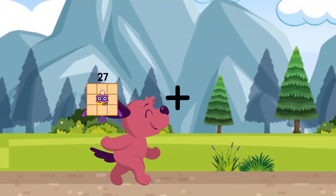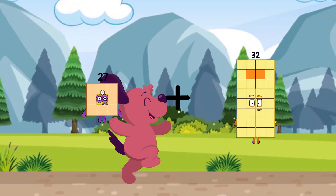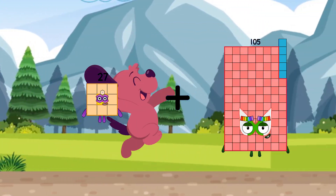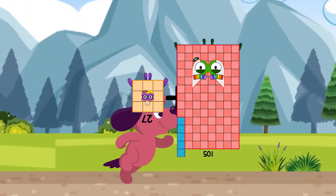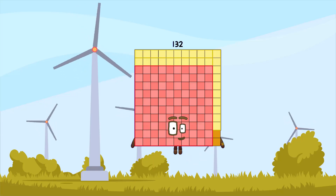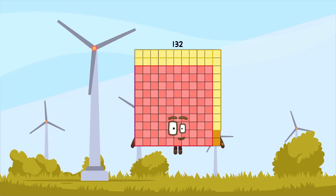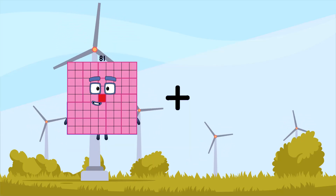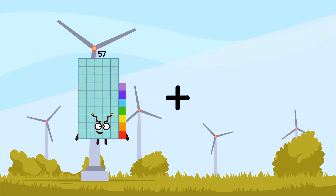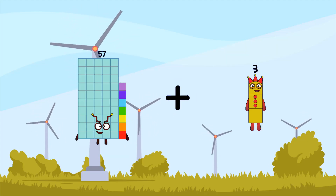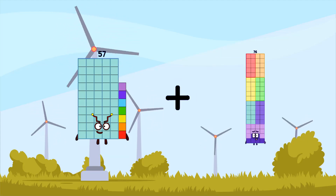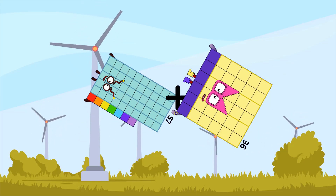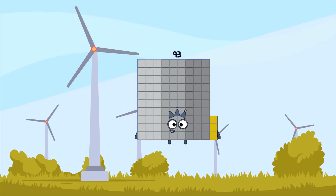27 plus 105 equals 132. 57 plus 36 equals 93.